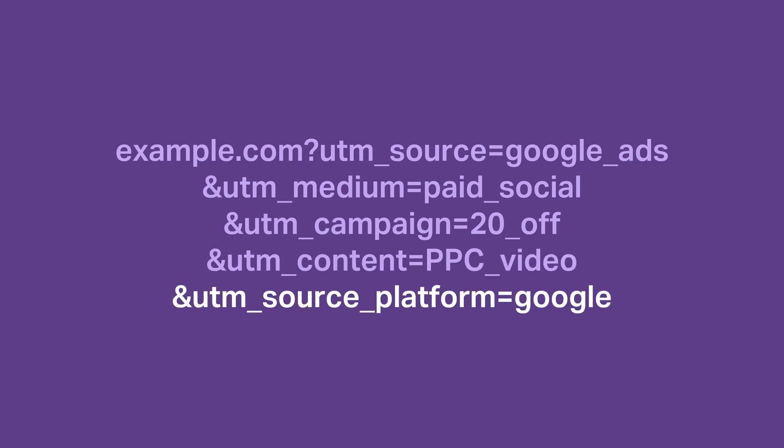UTM content would be the name of the creative you're using on the ad. UTM source platform would be the name of the social media platform. This clarity across the different dimensions ensures WooCommerce Order Attribution can identify the traffic to your online shop and map it along the channel definitions.